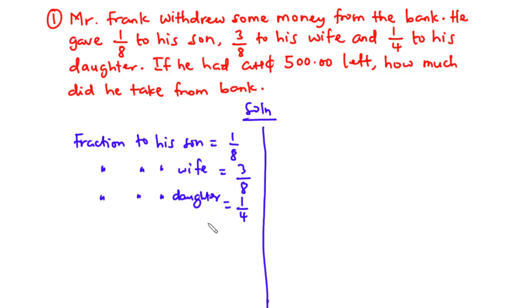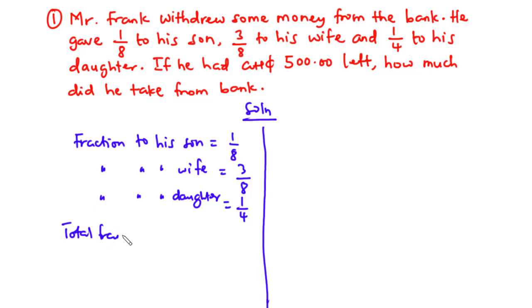Now we are going to find the amount of money that he took from the bank. But before we do that, we need to add up all these values to get the total fraction spent, then subtract that value from the total fraction which is one. Using ratio and proportion, we can find the amount he took from the bank. The total fraction spent is equal to one eighth plus three eighths plus one quarter.